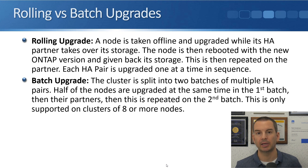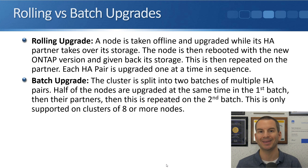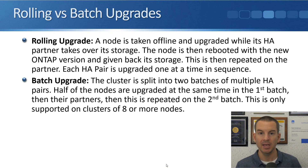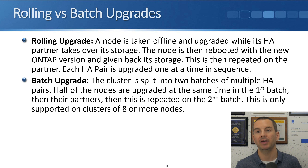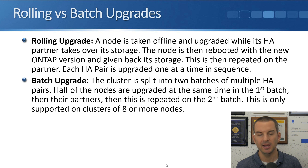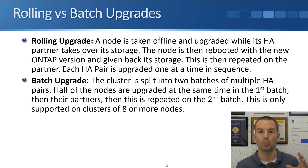There are two types of upgrades that can be performed: a rolling upgrade or a batch upgrade. With a rolling upgrade, each node is upgraded one at a time. When a node is being upgraded, it is taken offline and its HA partner takes over its storage. Once the new version of ONTAP is installed, the node reboots with the new version and takes back control of its storage. This is then repeated on the partner node, and each HA pair is upgraded in sequence until complete.